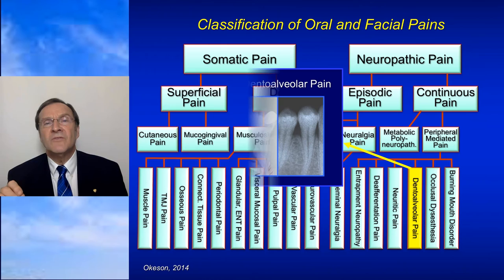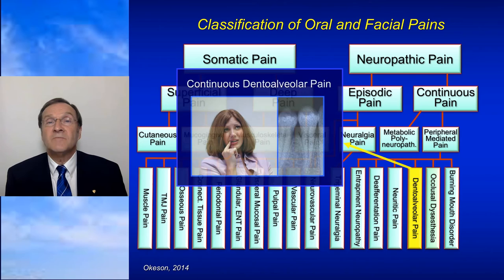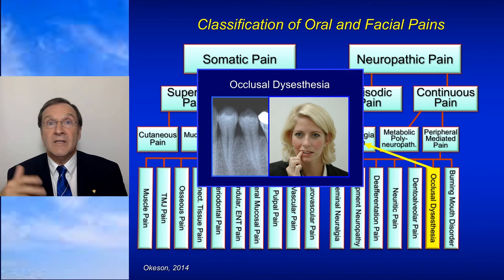We'll talk about pain felt in teeth but not coming from teeth — continuous dental alveolar pain, sometimes called persistent dental alveolar pain. In fact, one lecture covers eight different reasons teeth hurt that have nothing to do with the pulp or periapical structures — we need to know these before doing root canals or extractions. We'll also talk about occlusal anesthesia, where the patient describes a bite problem yet nothing is actually wrong with the bite — it's the neurological system bringing distorted information.